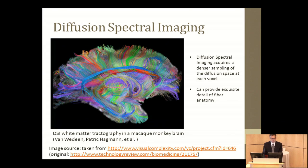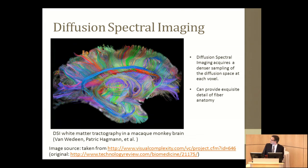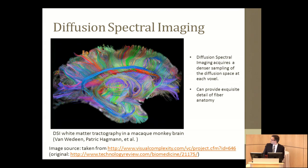Another form of diffusion imaging that is even more dense in terms of how much data it uses is diffusion spectral imaging, which is really pioneered by Van Medine. The image shown here was produced by Van Medine, Patrick Hagman, and others, and really shows just how much detail you can get out of tractography. This example is from the brain of a macaque monkey — the scanning on this took about 25 hours to perform, so it's not necessarily ready for routine use yet. This is a nice example to finish up with on tractography, as this image was included in the visual complexity collection curated by Manuel Lima, our first keynote speaker.